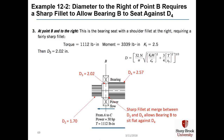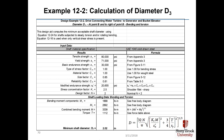The diameter to the right of point B requires a sharp fillet to allow bearing B to seat against D4. At that location we have torque and moment, and we assign KT equal to 2.5. Not surprisingly, diameter D3 with the torque and moment included will be larger than D2, and we get 2.02 inches for D3.